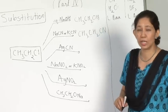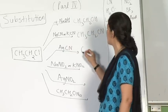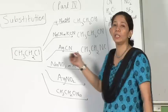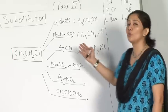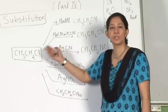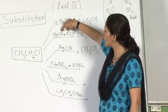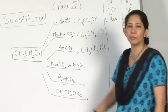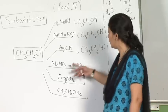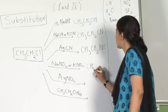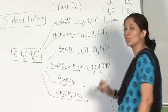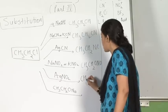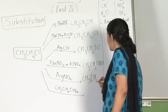But when I take AgCN instead of NaCN/KCN, I get CH3CH2NC — an isocyanide. This is an important distinction: NaCN and KCN are ionic compounds, but AgCN is covalent, so in AgCN the isocyanide acts as the nucleophile. Similarly, with AgNO2, I get the nitro group product CH3CH2NO2, rather than the nitrite obtained with NaNO2.